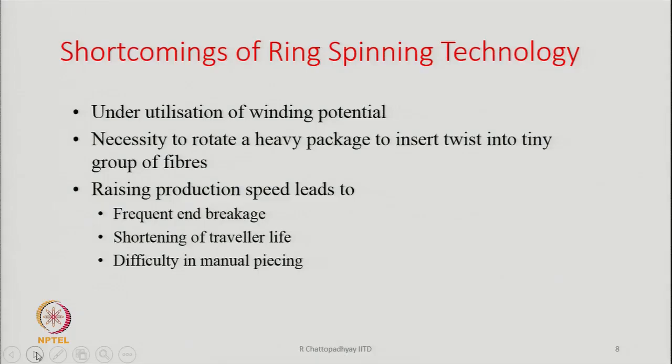Then the other difficulty is difficulty in manual piecing. In case the end breaks, we have to join the end with the fibers which are being fed from the front roller. This process is known as the piecing process. So if we go for higher and higher speed, manual piecing becomes more and more difficult — the failure will be more and more and hence there will be loss of production.